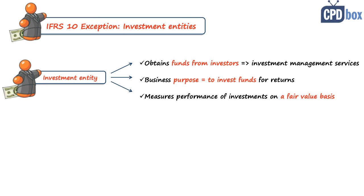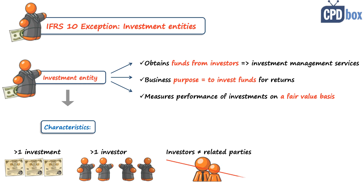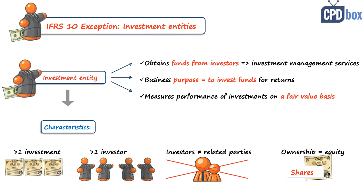IFRS 10 provides guidance on how to determine whether an entity is an investment entity, so you may need to check it in specific circumstances. The main characteristics indicating an investment entity are: it has more than one investment; it may have more than one investor (not a condition, just a characteristic); it has investors that are not related parties of the entity other than holding direct shares; and finally, it has ownership interests in the form of equity or similar interests like shares, and not debt. These are just characteristics or indicators, and even if the opposite is true, the entity can still be classified as an investment entity — so you must assess each case individually.